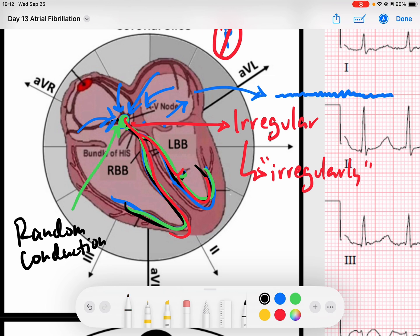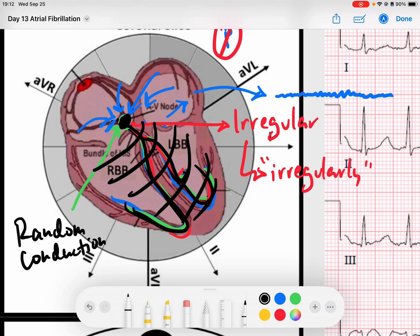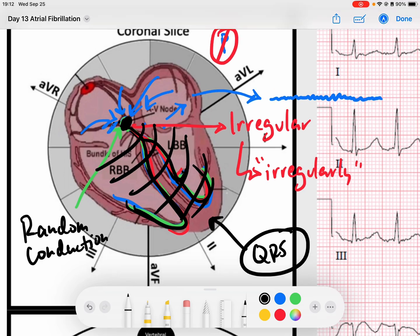The AV node is going to conduct the QRS complex. Notice now that once the AV node does capture that signal and sends it down, we should have normal QRS morphology. The QRS morphology itself should be unchanged. In AFib, we need to identify this as AFib. We also need to assess ventricular depolarization independently.